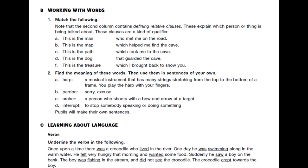Learning about language — verbs. Underline the verbs in the following. 'Once upon a time there was a crocodile who lived in the river.' Was — verb, lived — verb. 'One day he was swimming along in the warm water.' Was swimming — verb. 'He felt very hungry that morning and wanted some food.' Felt — verb, wanted — verb. 'Suddenly he saw a boy on the bank.' Saw — verb. 'The boy was fishing in the stream and did not see the crocodile.' Was fishing — verb, did see — verb. 'The crocodile crept towards the boy.' Crept — verb.